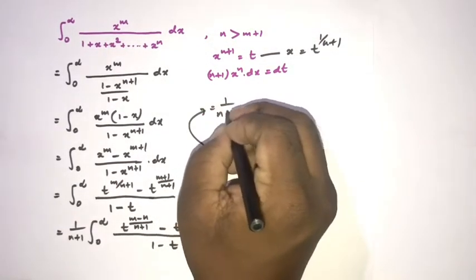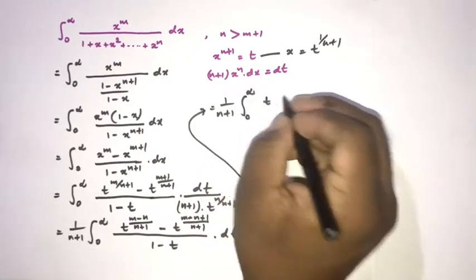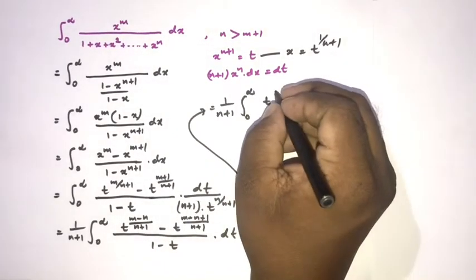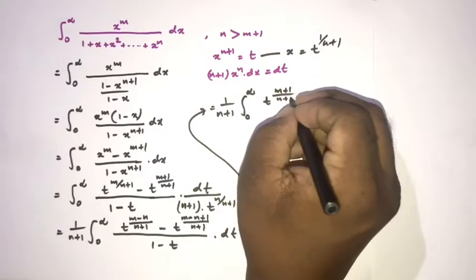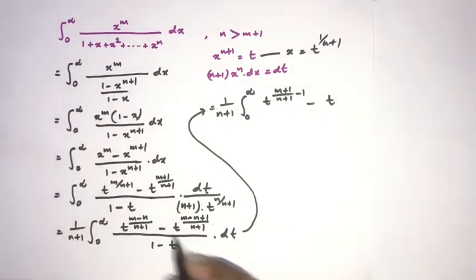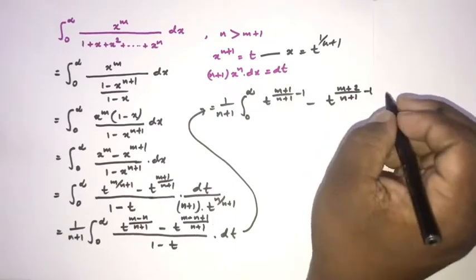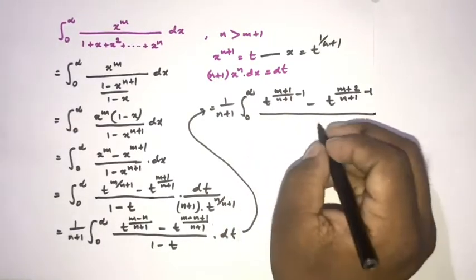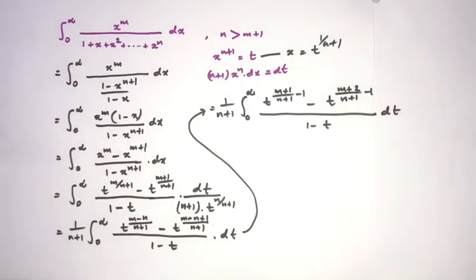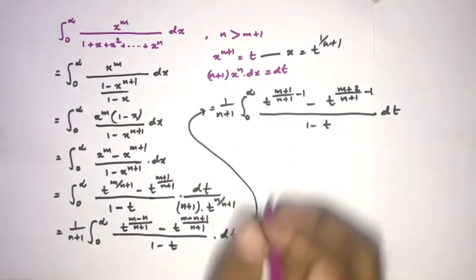Then we rearrange the powers: 1/(N+1) times the integral from 0 to infinity of t to the (M+1)/(N+1) minus 1, minus t to the (M+2)/(N+1) minus 1, all over (1 minus t) dt. This form should look familiar.